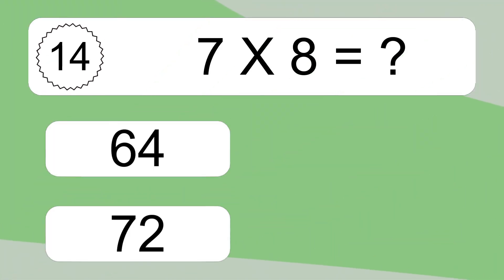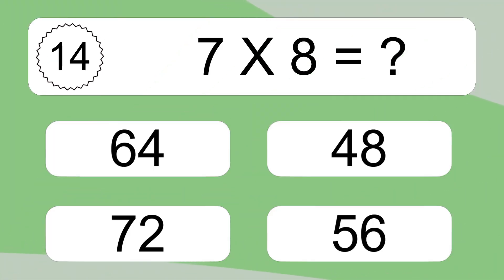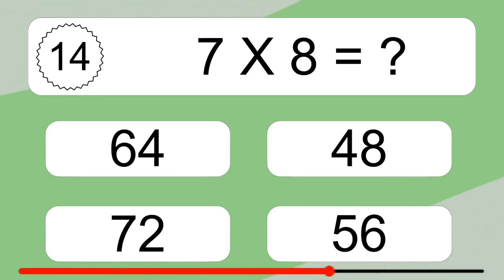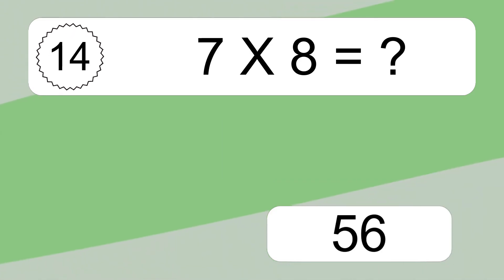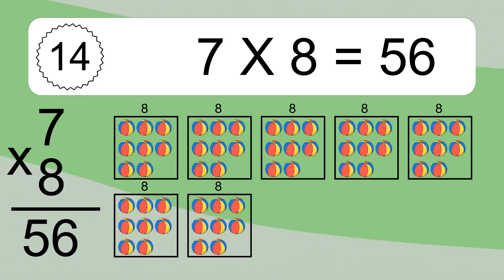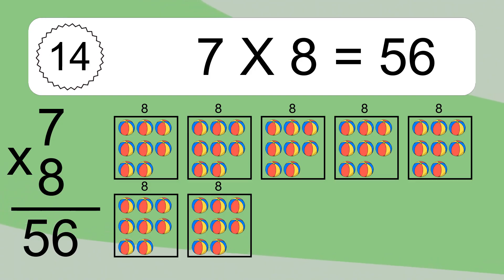7 times 8 equals what? 7 times 8 equals 56. We have 7 boxes, and each box has 8 colorful balls inside. If you count all the balls in all the boxes together, you will have 7 times 8 balls. This equals 56 balls.